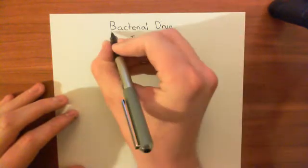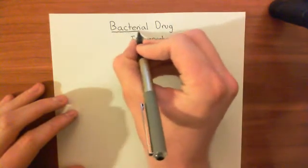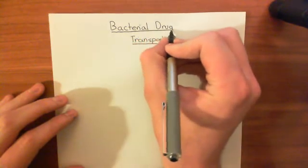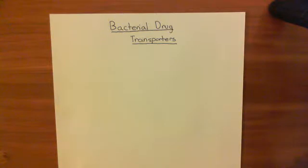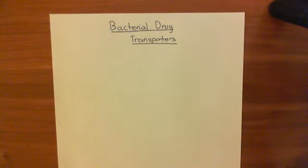In this video, we're going to look at the five major classes of bacterial drug transporters. We're going to give examples of each of them, and then we're going to have a general discussion about what their specificities are like, and an introduction to their physiological function — and the fact that they must have some physiological function beyond just transporting the drug.